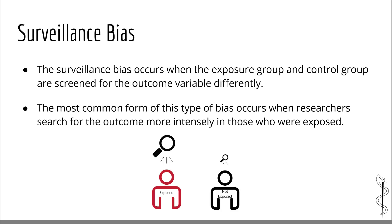Now let's talk about the surveillance bias. The surveillance bias occurs when the exposure group and control group are screened for the outcome variable differently. The most common form occurs when researchers search for the outcome more intensely in those who were exposed. For example, in a study looking at whether a risk factor is associated with cancer, researchers may perform more tests in patients known to be exposed than in those who were not. Blinding and ensuring equal screening between study groups is the best way to avoid this kind of bias.